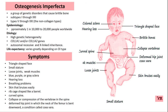Diagnosis of OI is based on clinical evaluation — that is, assessment of physical symptoms and family history — genetic testing which identifies mutations in COL1A1 and COL1A2, and bone density scans to evaluate bone density and structural abnormalities, as well as radiographic imaging.